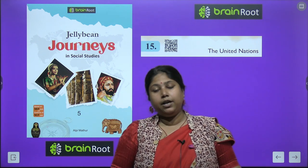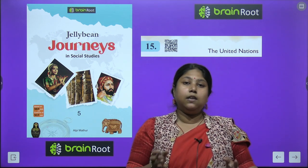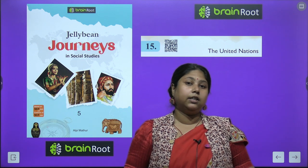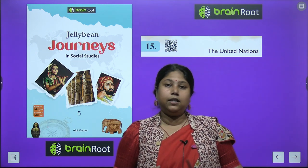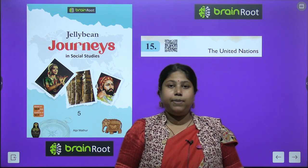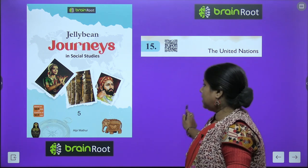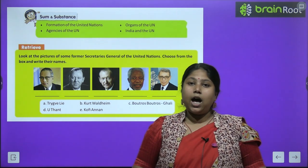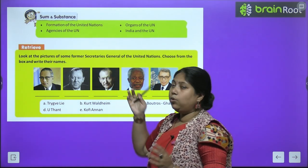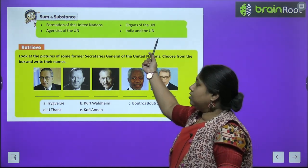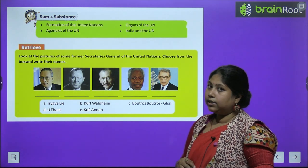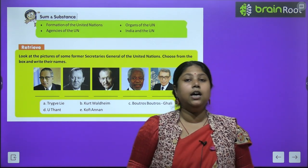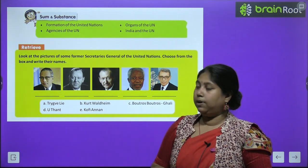Aaj hum United Nations ke baare mein padheenge, yaani UN ke baare mein padheenge. Aisi kuch saiyugd raashtra ya desh jo ek saat aakar vishwa kalyaan ke liye kaam karte hain, yaani world ke development ke liye kaam karte hain — ye inka main motto hai, to make the world a better place for living. Aaj ka chapter mein hum pardhenge ki kaise United Nations form hua, organs of the UN, what are the agencies of UN, aur India ke saath UN ka kaisa sambandh hai.